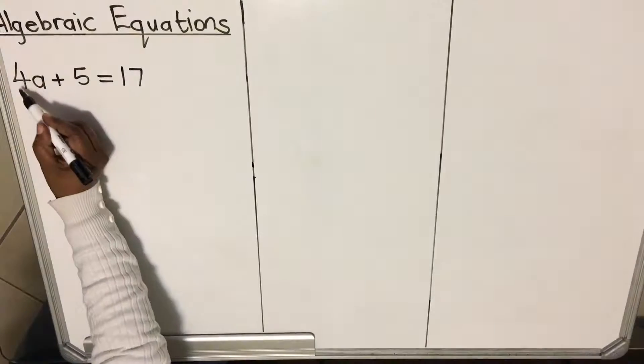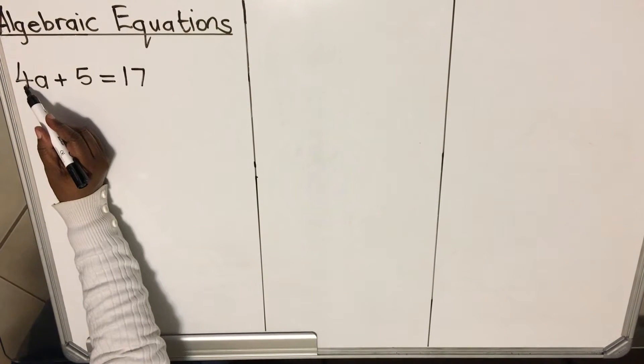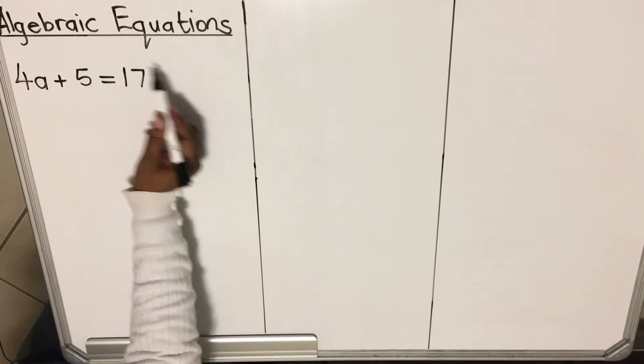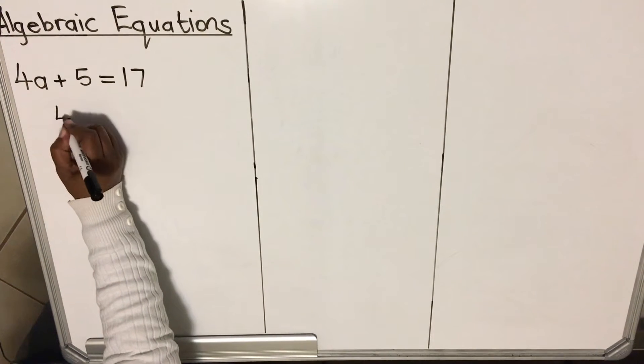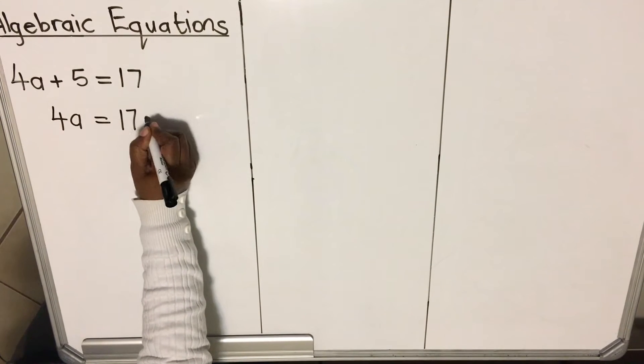Let's see how we do that. We want to leave this term that has a variable. It has a constant 4 coefficient and a. So we're going to take the 5 to the other side. When we have 4a is equal to, that's 17, then minus 5.